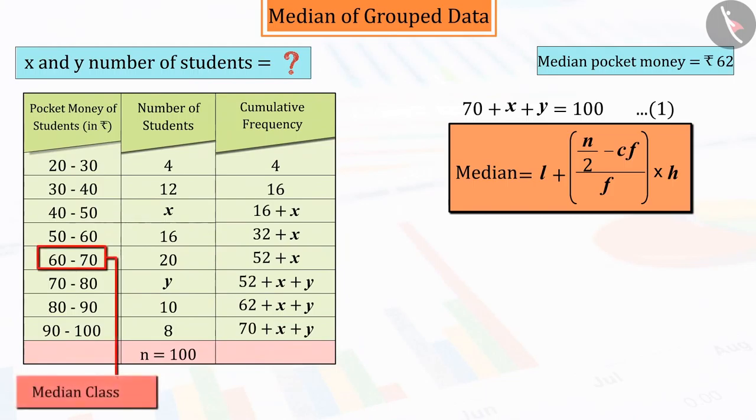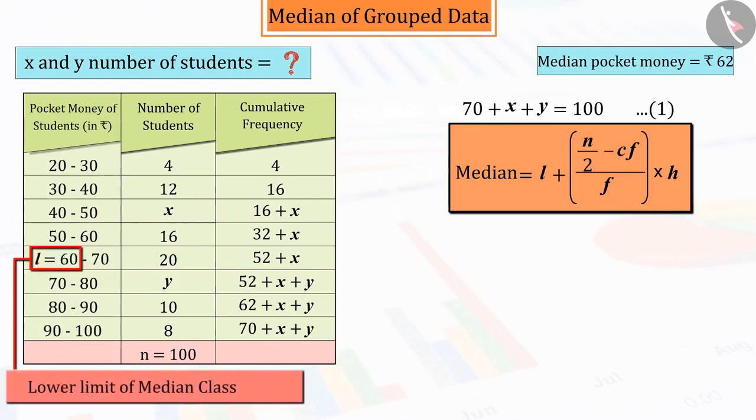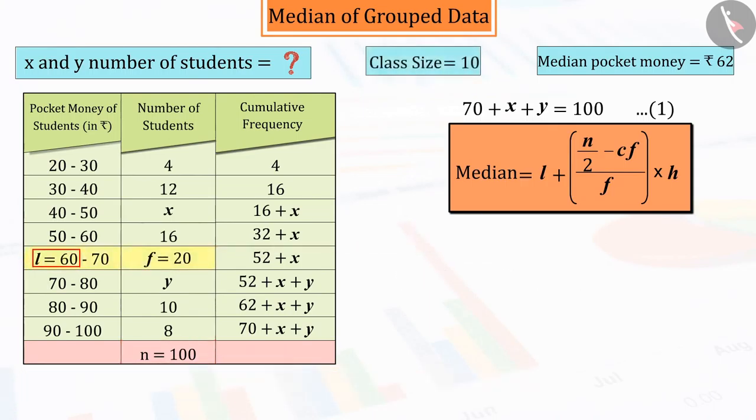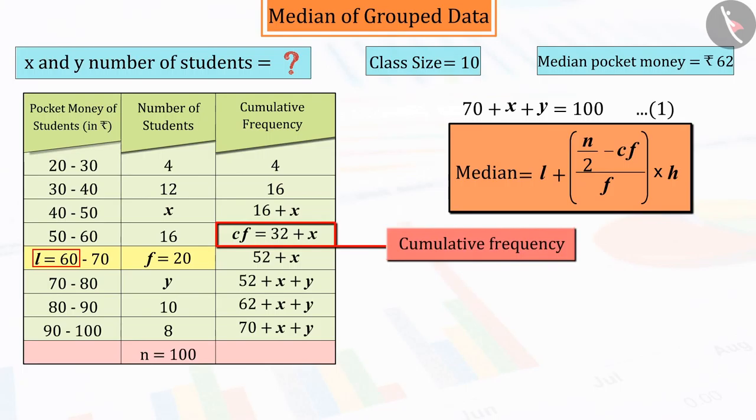Its median class is 60 to 70 because 62 belongs to this class, whose lower limit is 60, class size is 10, frequency is 20, and the total number of students is 100. And we also know that the cumulative frequency of the class just before the median class is cf, whose value is 32 plus x.